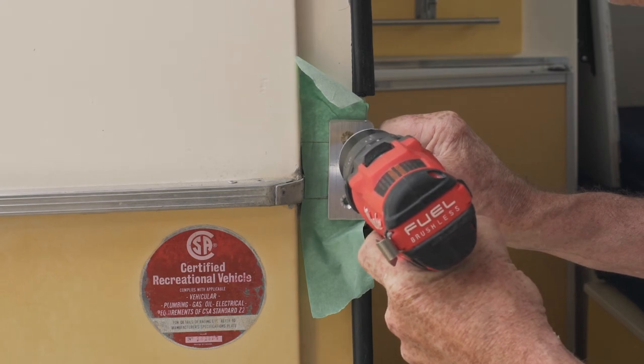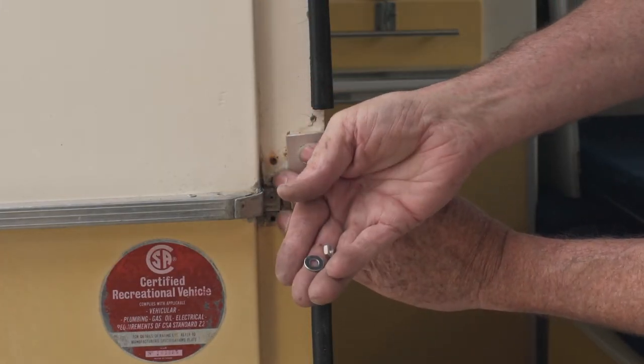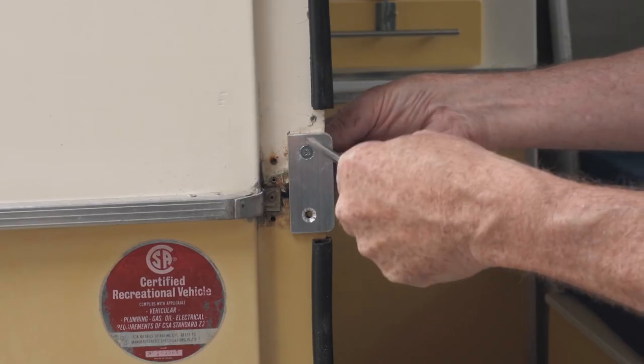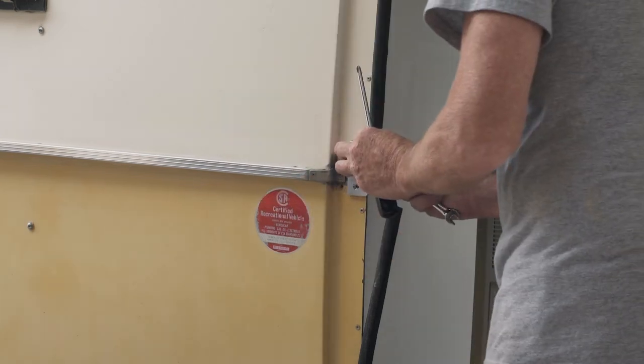Drill two 3⁄16 inch holes through the fiberglass. Start by drilling one hole then installing the flathead machine screw through the latch plate and door jamb. Secure with the washer and the nut on the back side and snug it up.